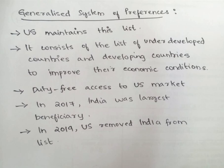To improve their economic conditions and to provide duty-free access to their exports, the US maintains this list of countries. India was also among the Generalized System of Preferences until 2019. In 2017, India was the largest beneficiary of this GSP. However, in 2019, the US removed India from this list.